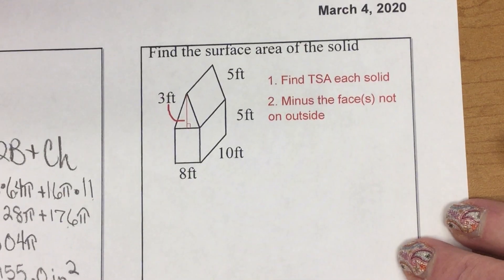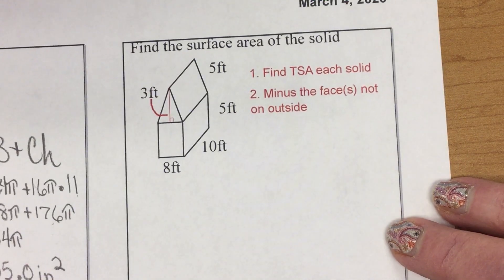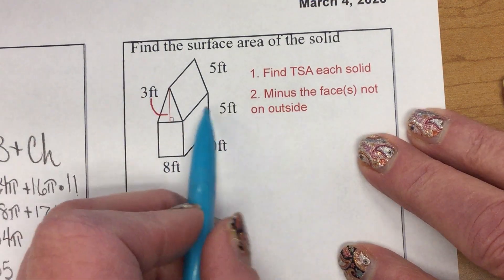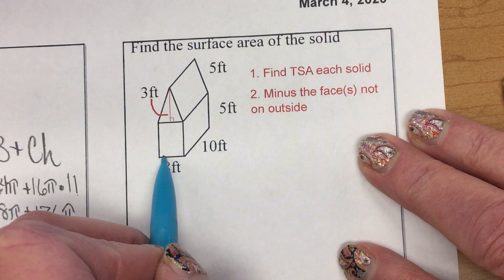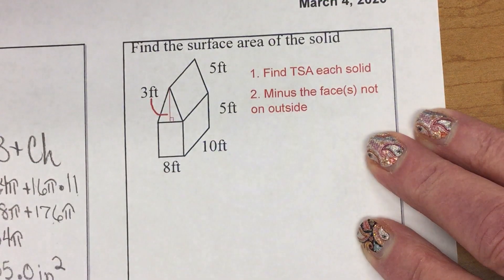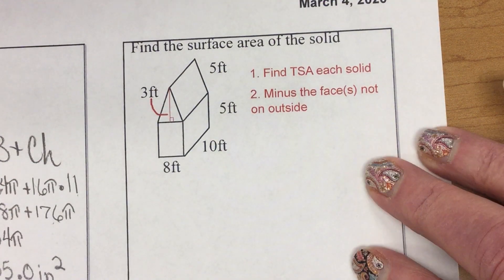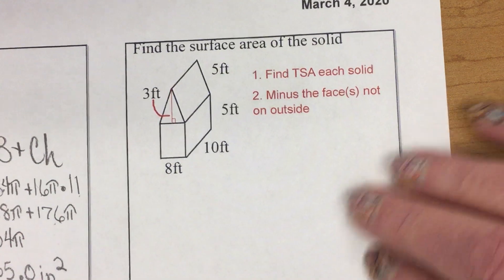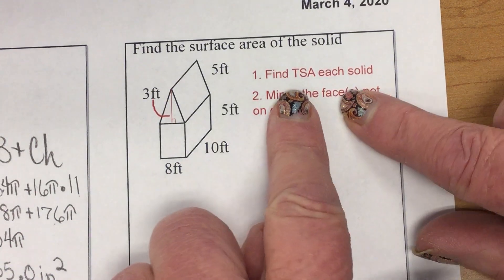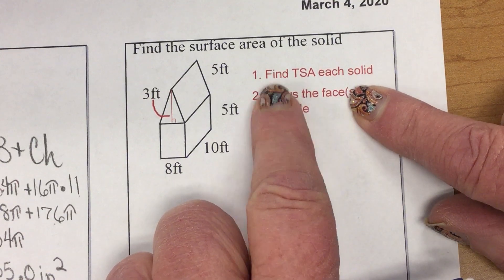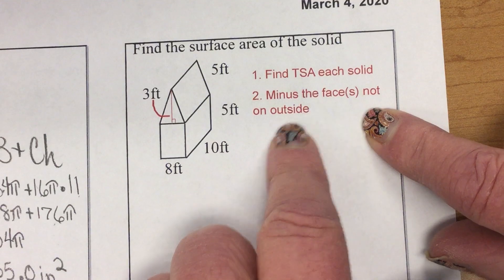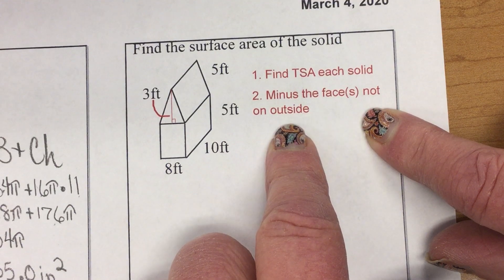Those are how to find surface area of a cylinder. Now, when we talk composite figures, I have a rectangular prism and a triangular prism. And I want to know the area of them, surface area together. So, major hint, find surface area of the solids, and then subtract the faces that are not on the outside.